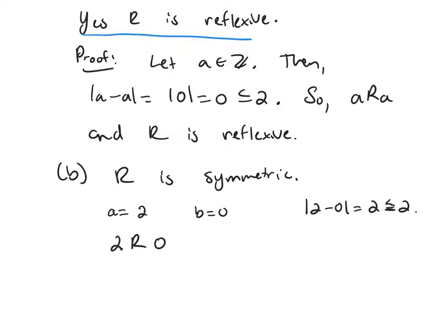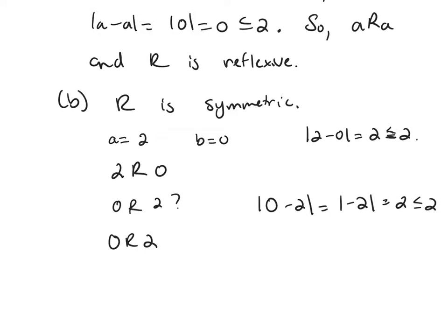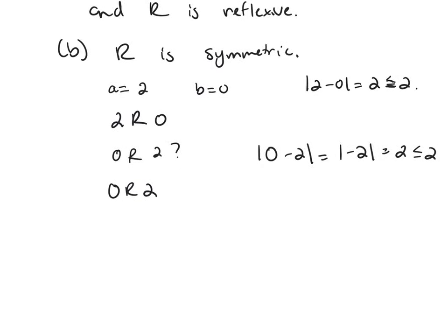If I take 0, is 0 related to 2? The absolute value of 0 minus 2 is the absolute value of negative 2, which is 2 — still less than or equal to 2. So yes, 0 is related to 2. We've done an example and convinced ourselves it's true. So yes, R is symmetric. Let's prove it.